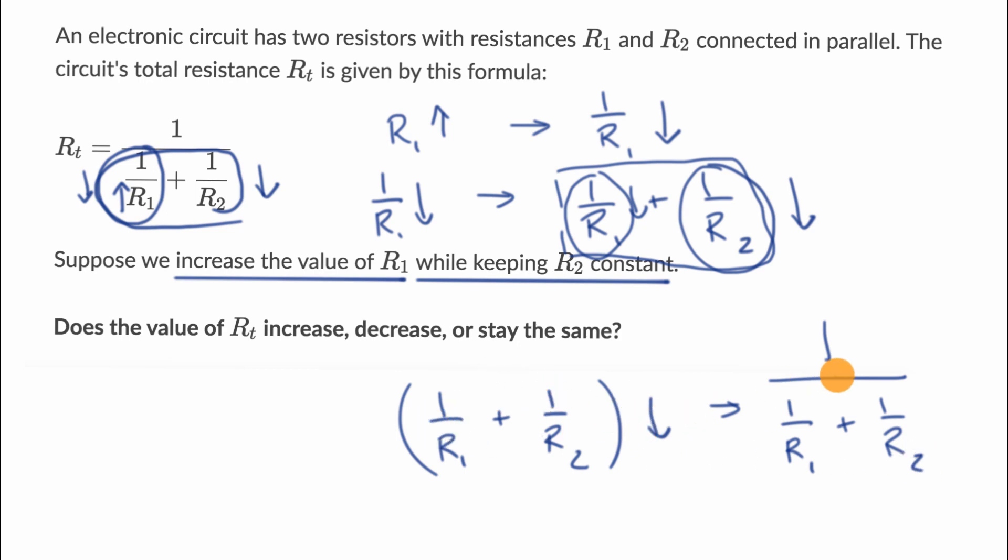Well, if something is going down, the reciprocal of that is going to go up. If you get smaller and smaller denominators, one over that is going to be a larger and larger value. So the value of RT increases if R1 increases and R2 is constant.